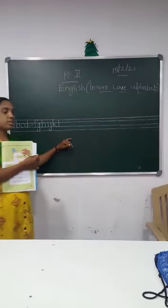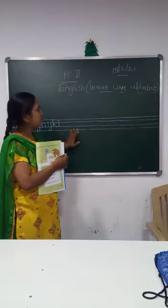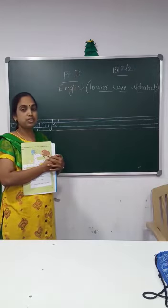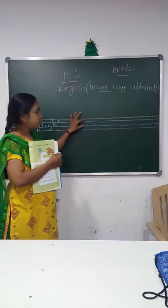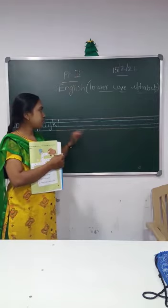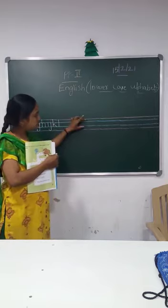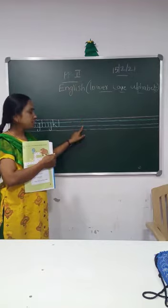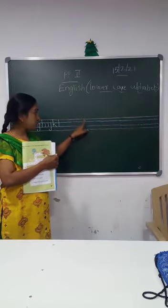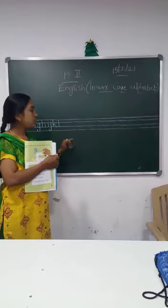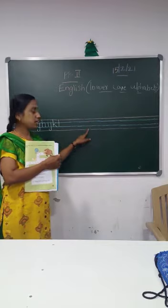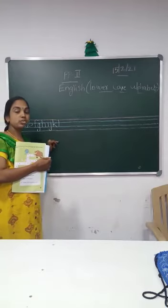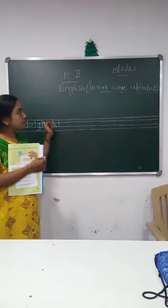We have learned from letter A to letter X. In lowercase alphabets we have three types of alphabets — base alphabets, hanging alphabets, and falling alphabets. Base alphabets are written only inside the blue line. Hanging alphabets start from the red line and end at the blue line. Falling alphabets start from the blue line and end at the red line.